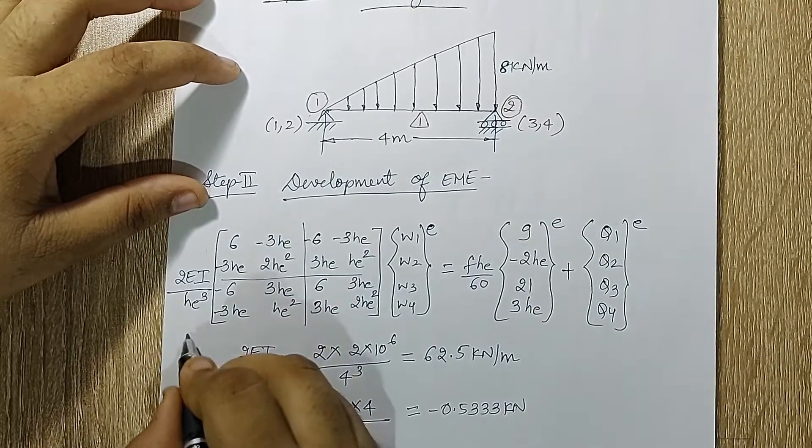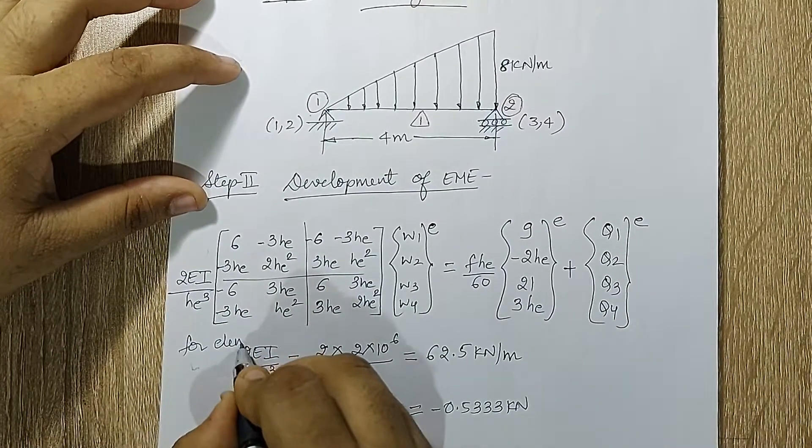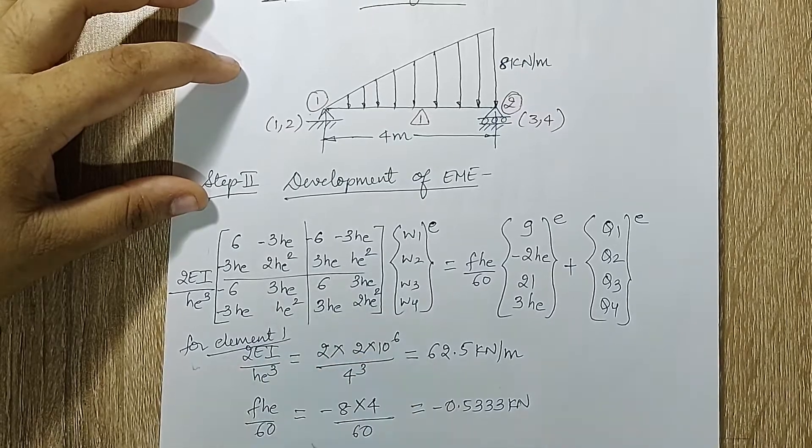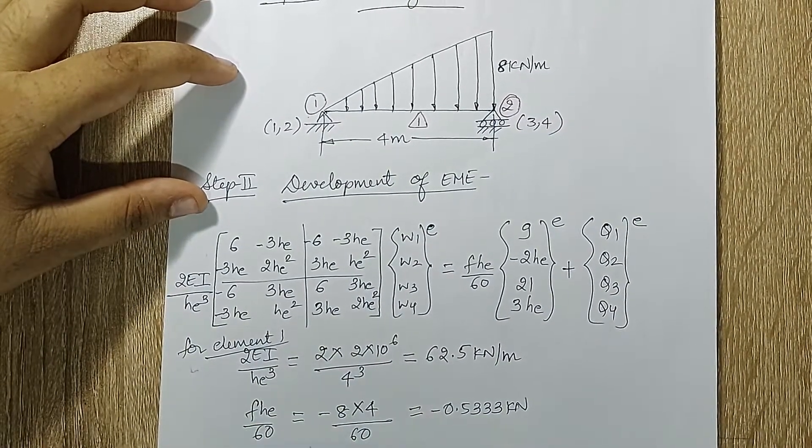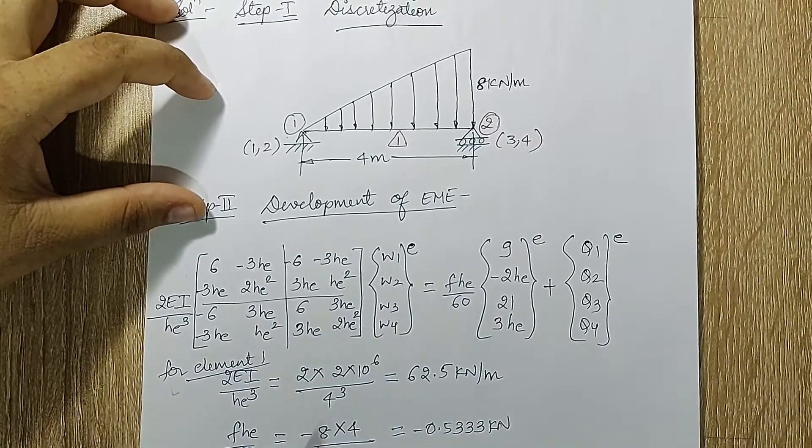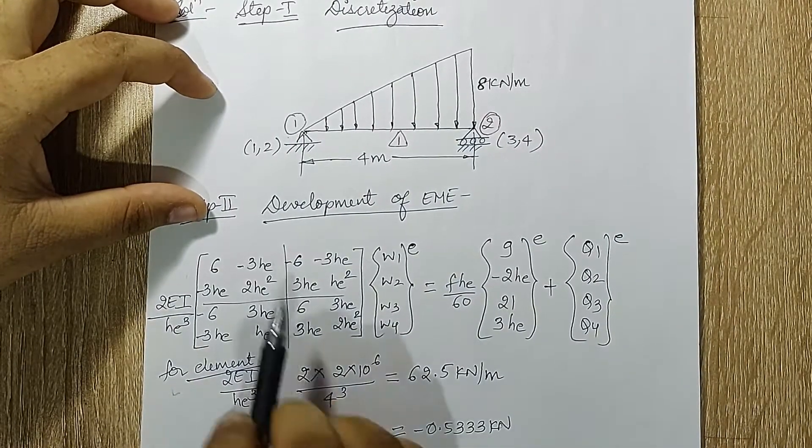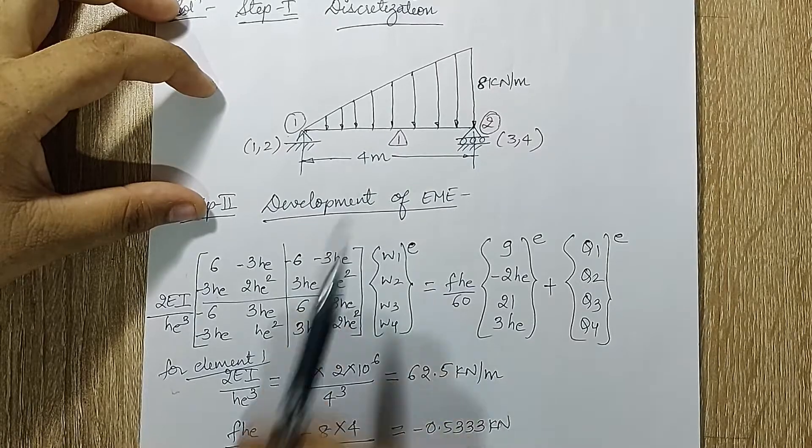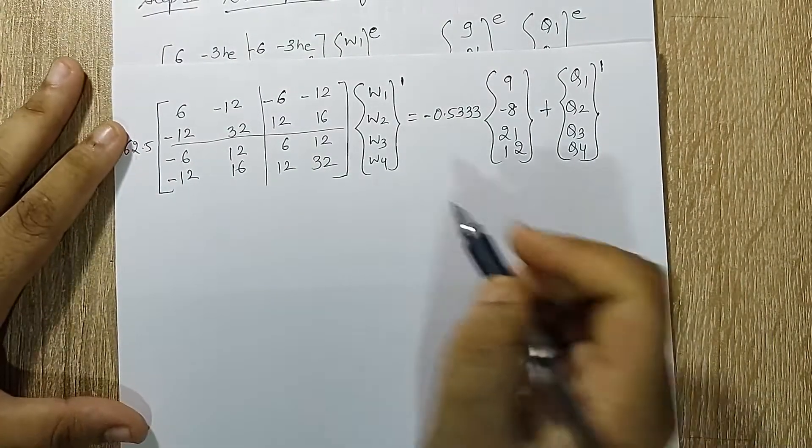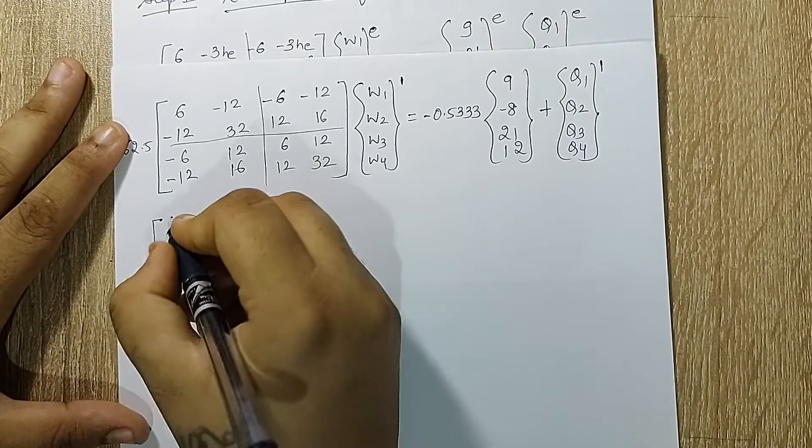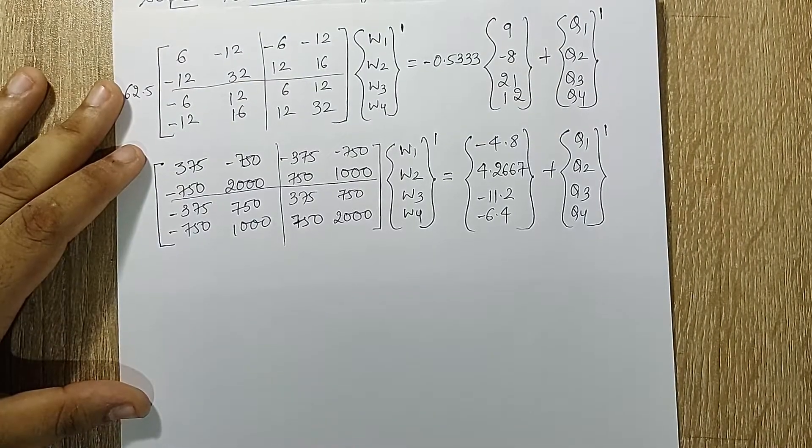Now if you observe carefully, if you want you can write here for element 1. Because I have only one element, so even if you don't write it really doesn't matter, but still I'm writing here for element 1. So I'll substitute these two values in this equation and the value of HE is 4. I'll multiply the 62.5 inside and this number inside and I obtain this matrix.